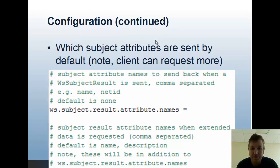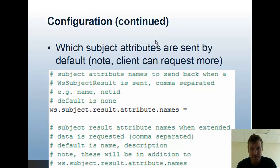You can also configure which subject attributes are sent back to the client by default. There are two levels: the regular setting to send attributes back on every request, or if the client identifies that they want detailed attributes, you can set a list of attributes to be sent back for those requests. The client can also request attributes by name, so if there are attributes not in these lists that clients need, they could identify that in the request.